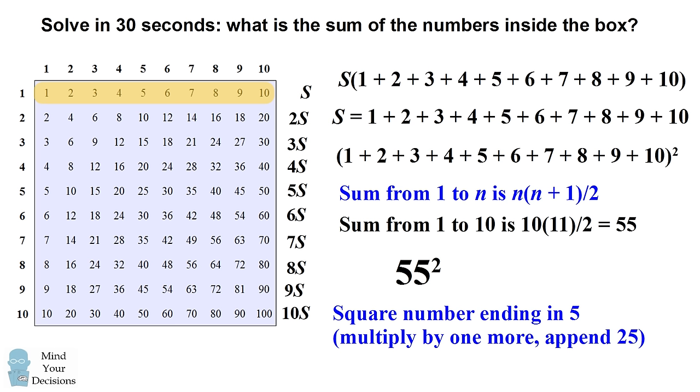There's also a trick for this, and you can click on this link, you may have seen my video. To square a number ending in 5, you take whatever values in the tens digit, or whatever leading numbers there are, multiply it by one more than itself, and then append 25.